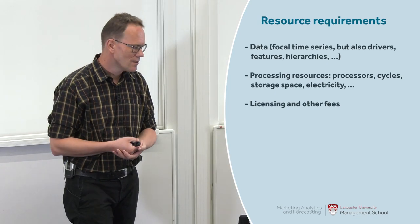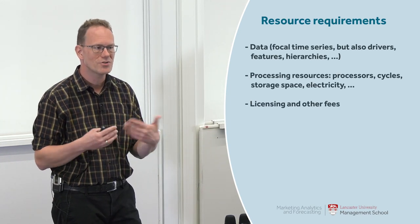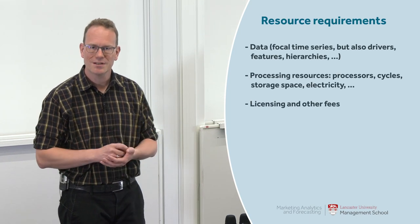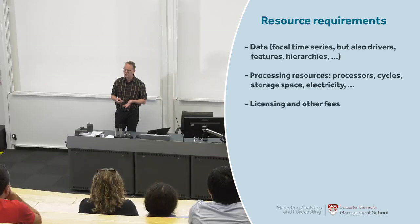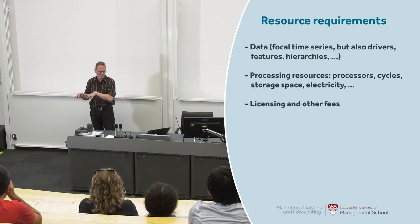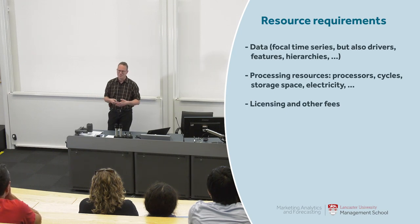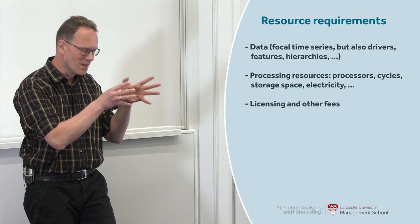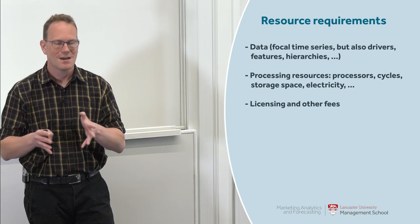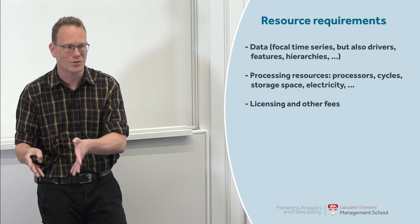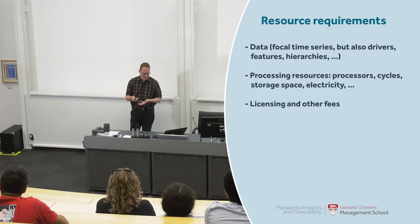Processing resources — cycles, how much processing time do I have to buy at Amazon Web Services or Microsoft Azure for my huge neural network forecast. Storage space — do I need to store my forecast at a granular or aggregate level. And electricity: the resource requirements of forecasting in terms of electricity can be humongous. As a retailer, your CO2 footprint simply from the electricity requirements of your forecasting process can translate into tens of thousands of cars once you move to more sophisticated neural network methods.